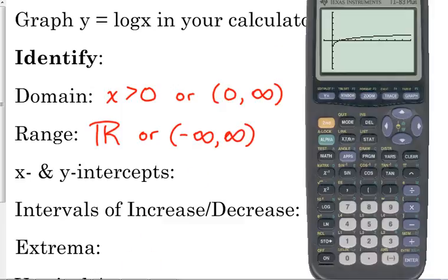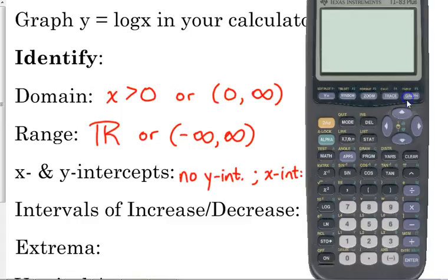All right, let's talk about the intercepts. When we look at the graph here, it does not cross the y-axis. So there is no y-intercept. However, it does cross the x-axis. Let's see where that happens. Let's look at the table, see if it happens at a whole number. It does. It happens at 1.